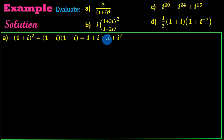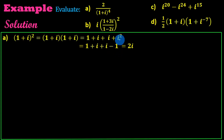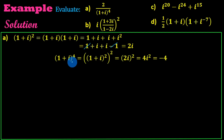One plus i plus i plus i squared. I squared equals minus one. So the value is one plus i plus i minus one. That simplifies: the ones cancel, giving us 2i. So one plus i the whole to the power of 4 is equal to 2i squared.